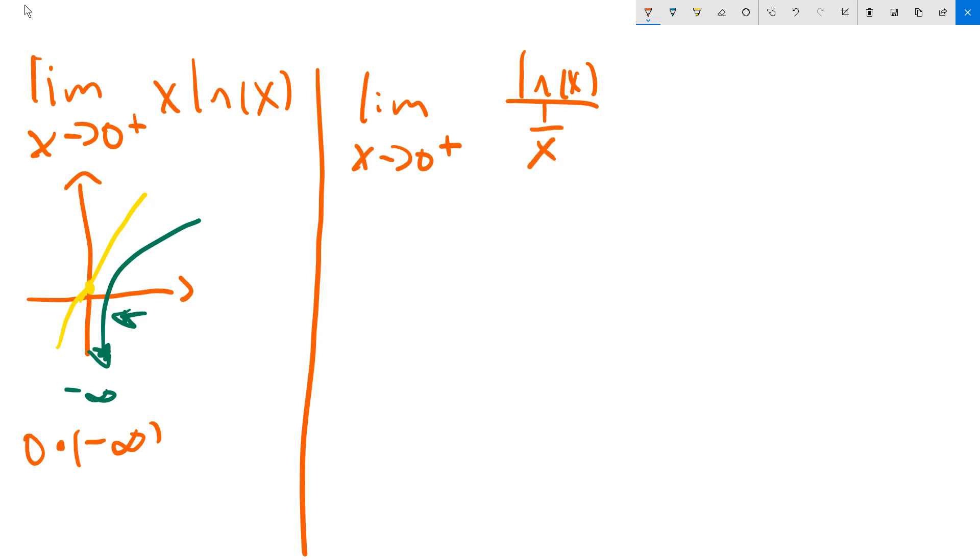Now, I don't want this to seem arbitrary, and it isn't arbitrary because take a look. ln(x) over 1 over x is equivalent to, by the basic rules of fractions, just writing the following instead: ln(x), and then you keep change, and then you flip the bottom so it becomes x over 1.